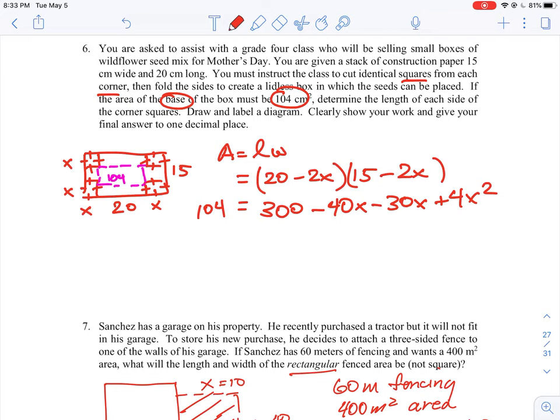So I'm just going to do one more step here where we do a little bit of simplification. So it's going to be minus 70x plus 4x squared.